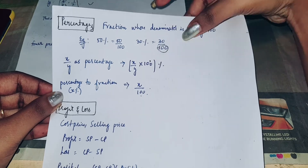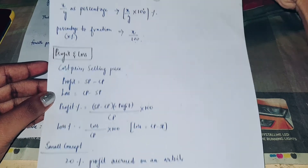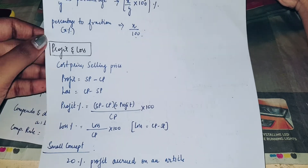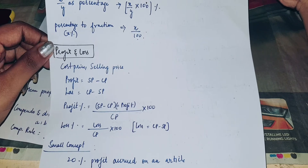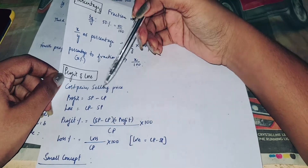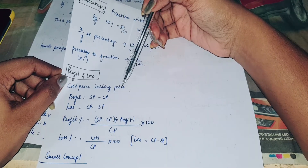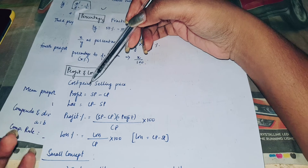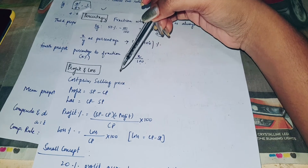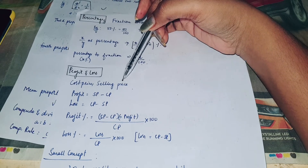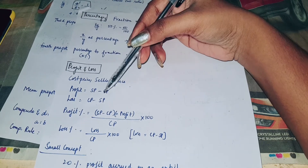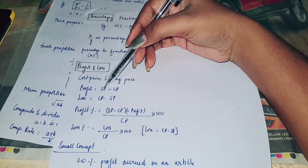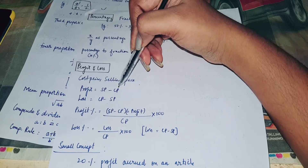Our next important thing is Profit and Loss concept. Profit and Loss is the main concept of Cost Price and Selling Price. If Selling Price is greater than Cost Price, we have a profit. Profit is equal to SP minus CP.